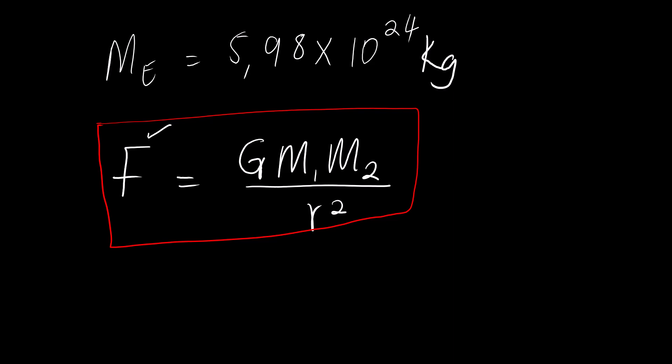Now this equation. This F is the gravitational force between two particles or two objects. G is the gravitational constant which the value is 6.67 times 10 to the power negative 11. M1 is the mass of the first object. M2 is the mass of the second object. And then R is the distance between their centers. So basically to calculate the gravitational force between two objects, we need the mass of each object and the distance between their centers.